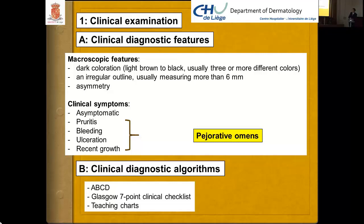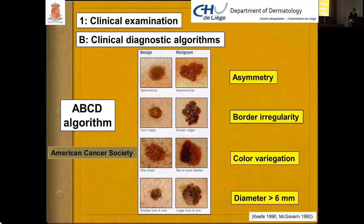There are several clinical diagnostic algorithms: the ABCD rule, the Glasgow 7-point clinical checklist, and teaching charts. The ABCD algorithm was developed in the early 1990s, stimulated by the American Cancer Society, and is based on Asymmetry, Border irregularity, Color variation, and Diameter. In the ABCD rule, this lesion is not symmetrical, has irregular borders, shows two or more colors — dark brown and light brown — and a diameter over 6 mm.